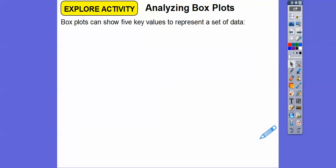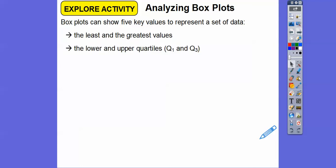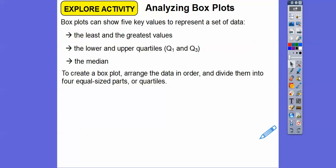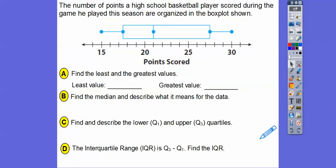They both have their advantages. Box plots can show five key values to represent the set of data: the least number and the greatest number, the lower and upper quartiles or the interquartile range (which is the box part), and the median, which is that line going down the middle of the box. To create a box plot, we arrange the data in order and divide them into four equal parts, or quartiles, and then draw the box and whiskers.